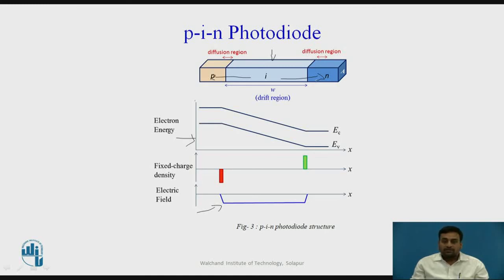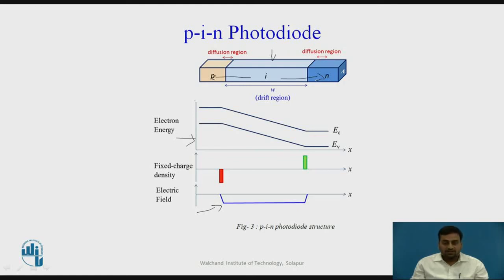When light energy is applied to the PIN photodiode, most of the energy is absorbed by the intrinsic region because of the wide depletion region. As a result, a large number of electron hole pairs are generated. Free electrons generated in the intrinsic region move towards the N-side, whereas holes move towards the P-side. When free electrons and holes reach the N-region and P-region respectively, they are attracted towards the positive and negative terminals of the battery and constitute a photocurrent.